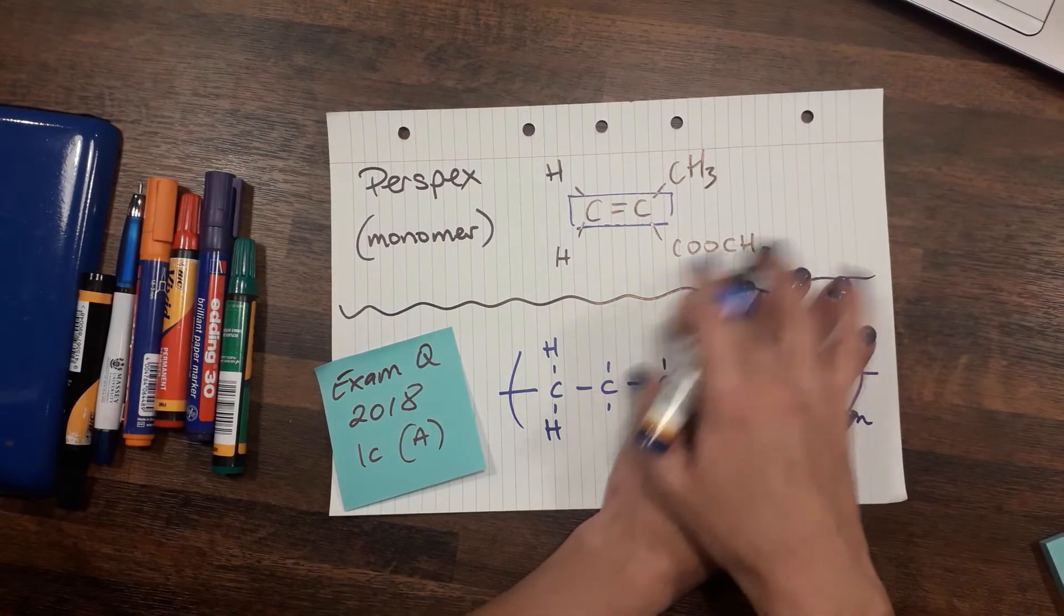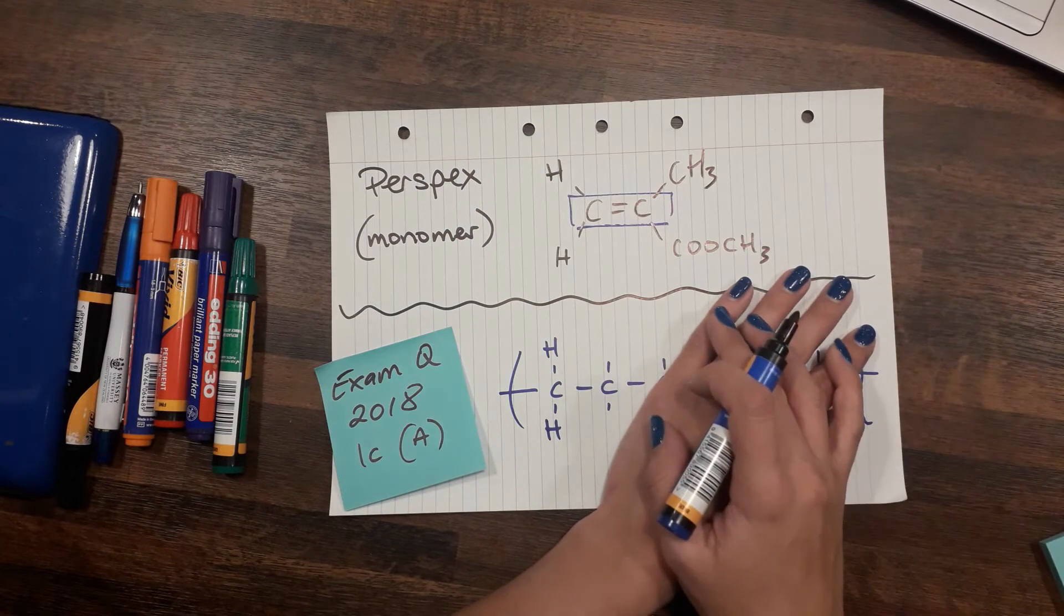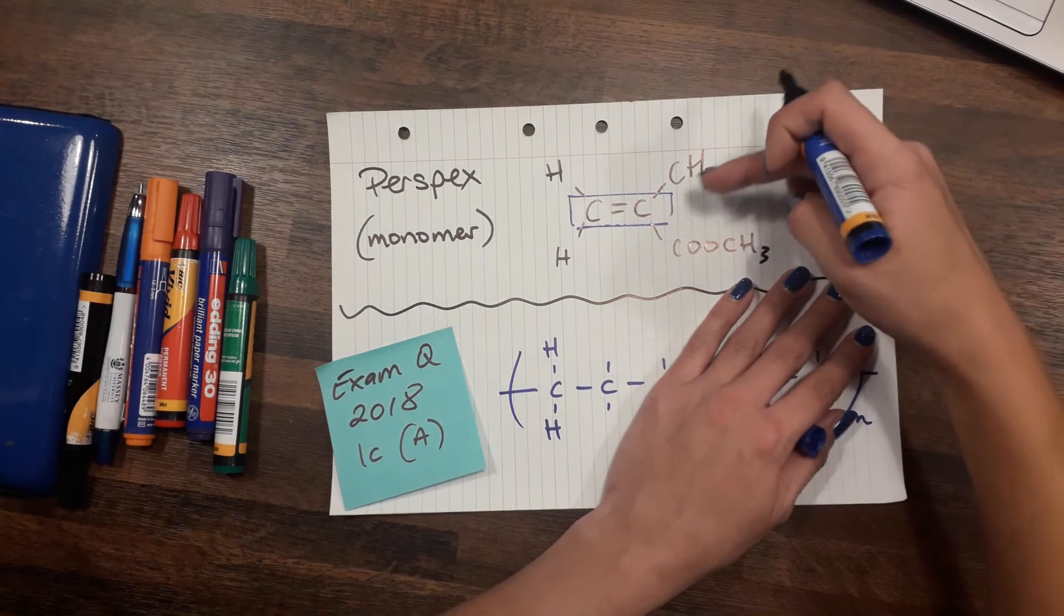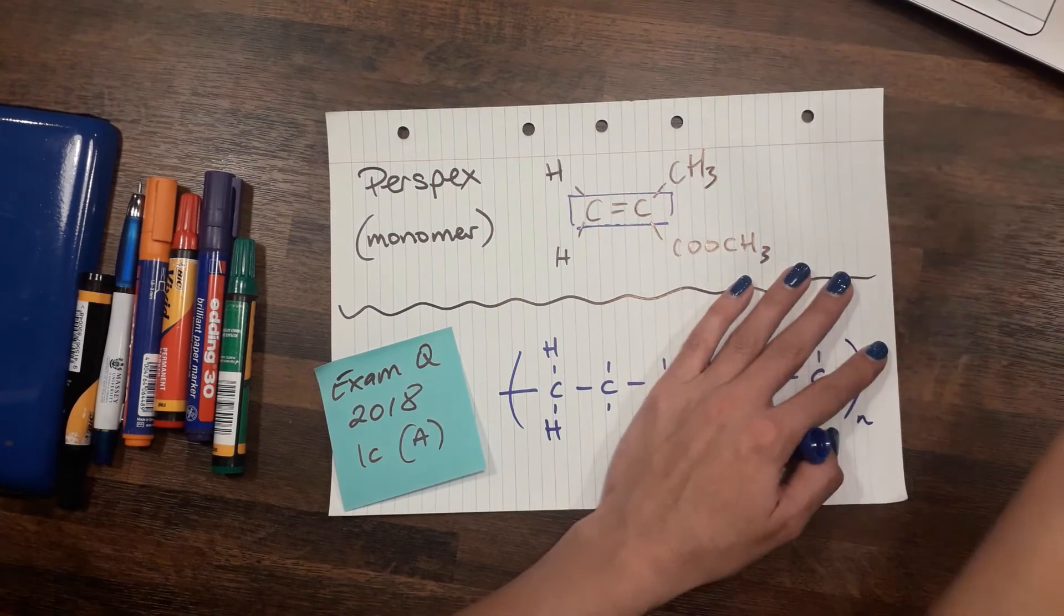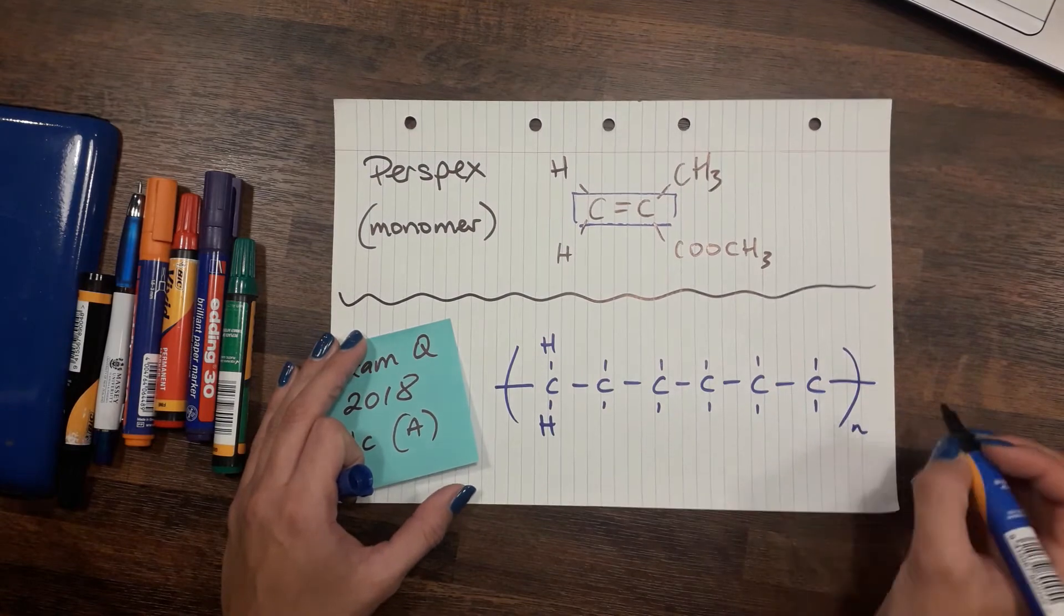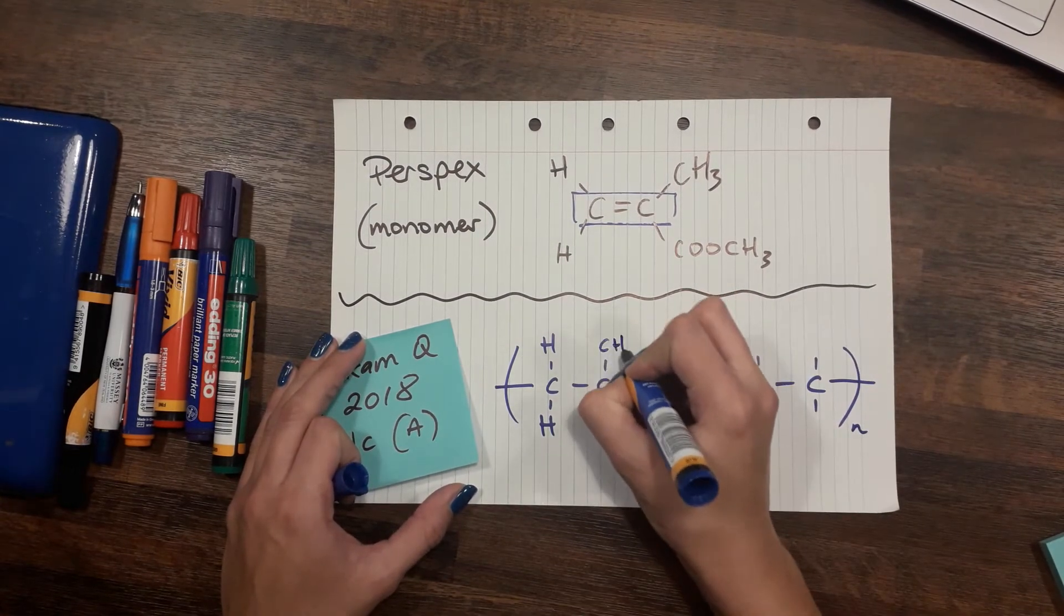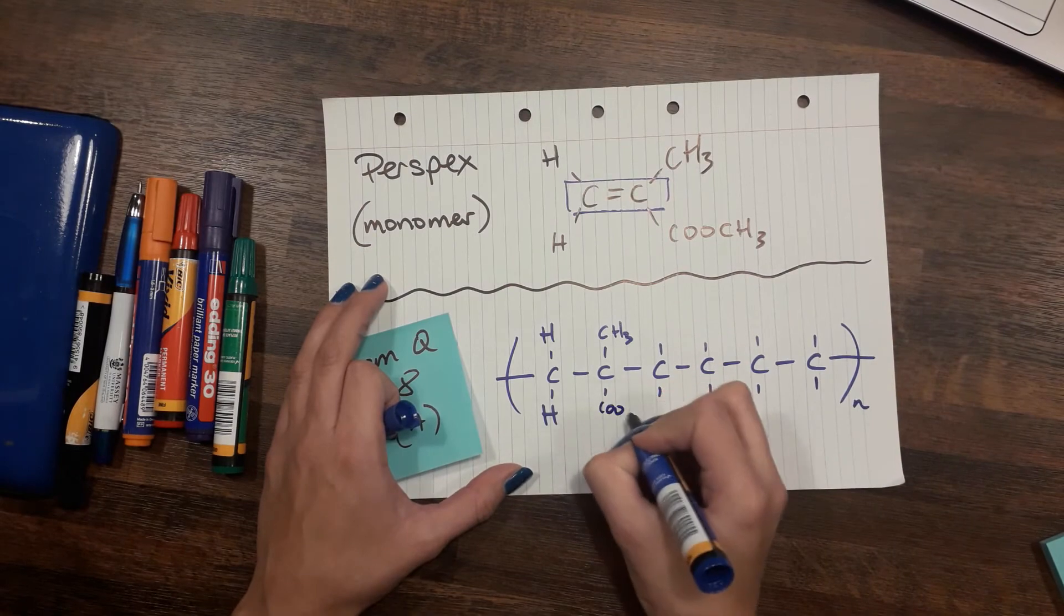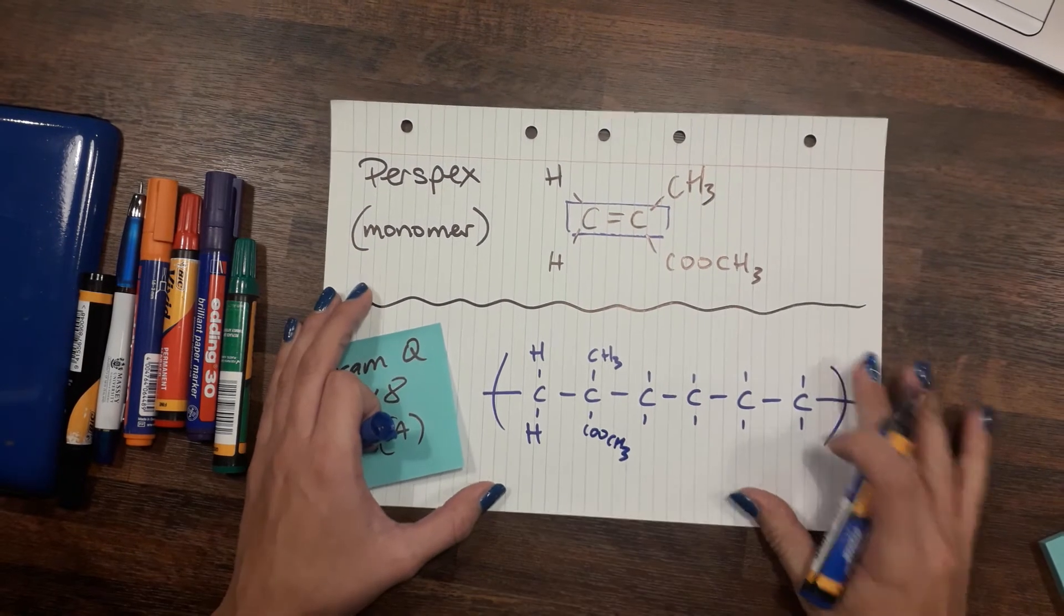And then that second carbon needs a CH3 group on it and a COOCH3 group on it. It doesn't matter what this is, because this could be anything. You don't need to worry about it, you just need to copy it down. I'm going to draw the CH3 placing up, because that's the way it's been given to me, and it helps make it easier for the examiner as well. COOCH3 down there, squeeze it in.